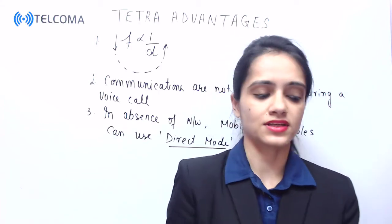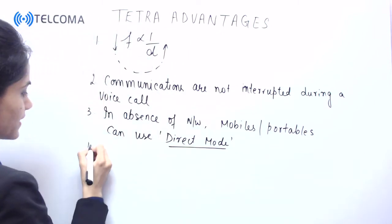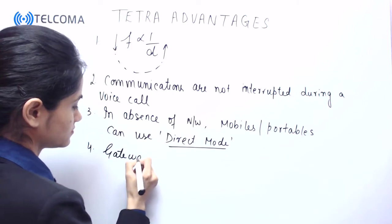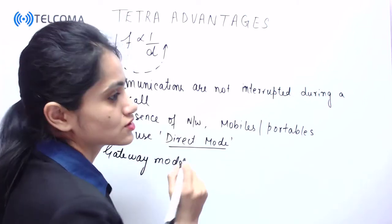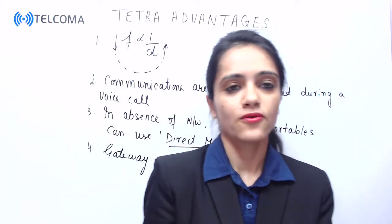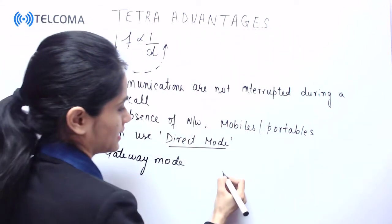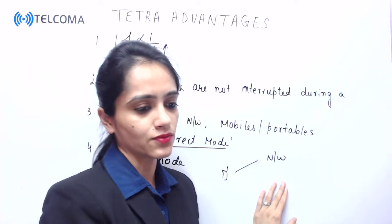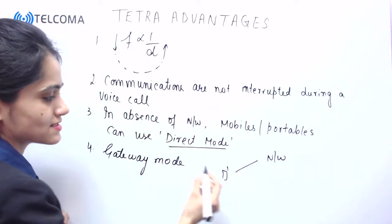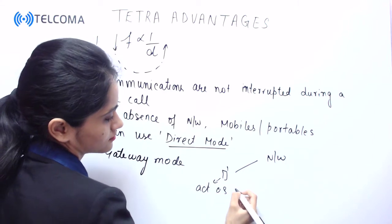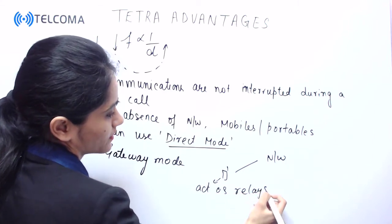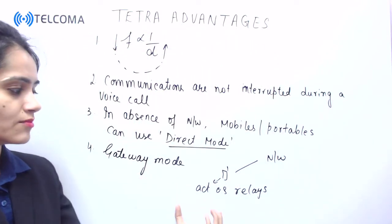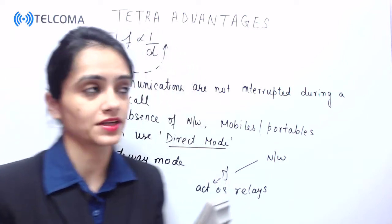Now let's move to another advantage. In TETRA technology there is a mode called gateway mode. In gateway mode, when a single mobile is in connection with the network, it acts as a relay for other devices that are out of range of the infrastructure. This gateway mode is also an advantage of TETRA technology.